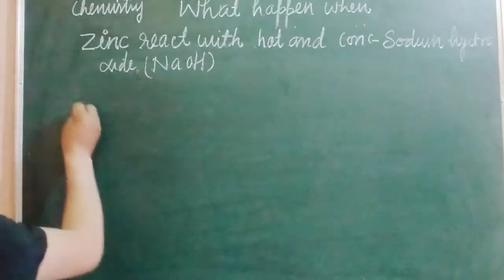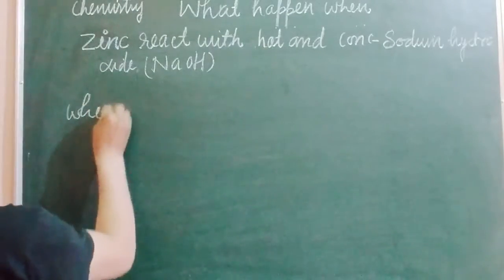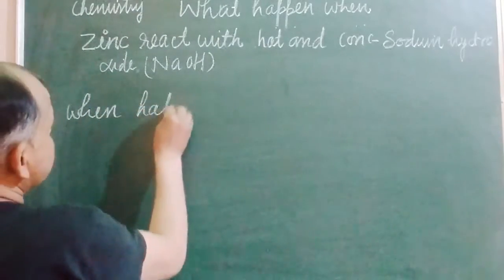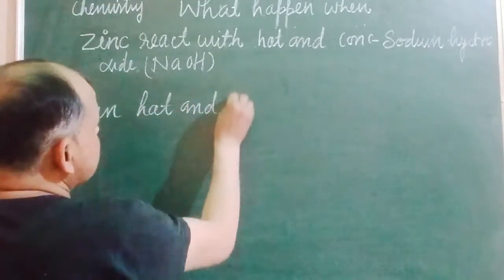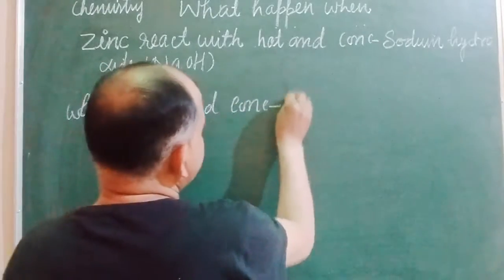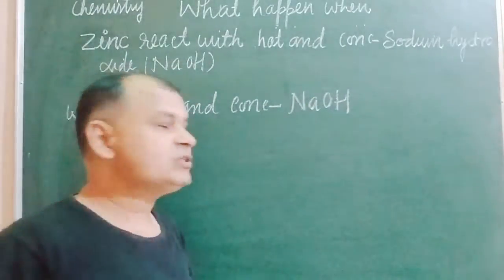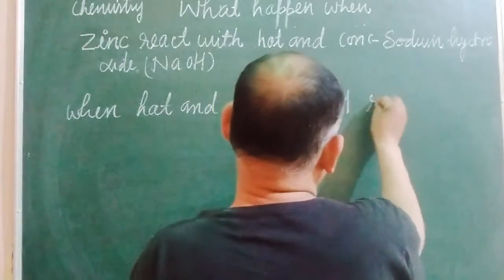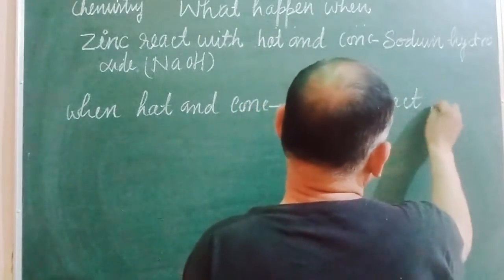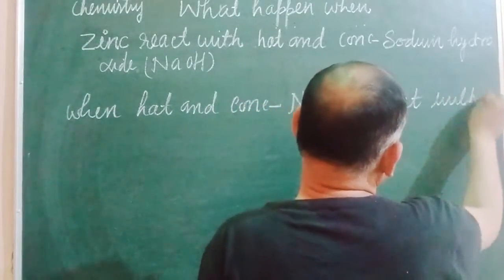So when hot and concentrated NaOH, which is called sodium hydroxide or caustic soda, reacts with zinc,